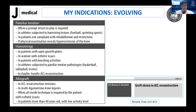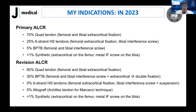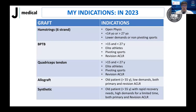When I was assigned this presentation, I realized my indications have completely changed over ten years. Right now for primary ACLs I do generally 70% quad tendon, 25% six-strand hamstring tendon, 5% patellar tendon, and less than 1% synthetic. For revision, I use 60% quad tendon, 30% patellar, 5% six-strand hamstrings, 5% allograft, and less than 1% synthetic.